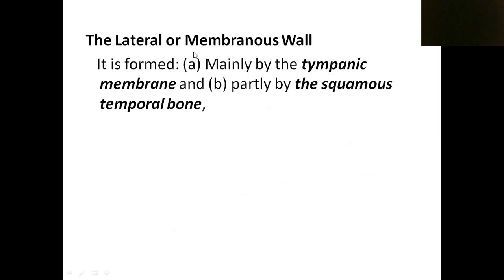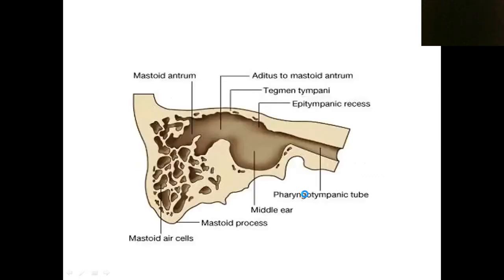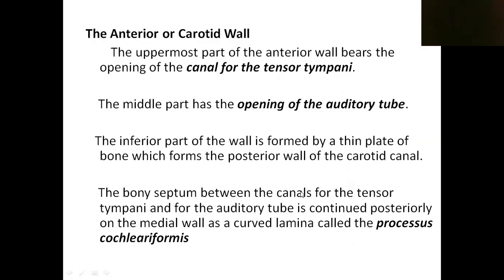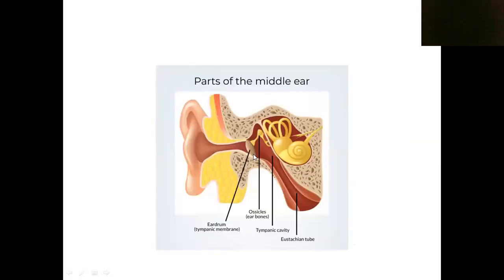The lateral wall is formed by the tympanic membrane. This is the medial wall and this one is the lateral wall of the middle ear. The lateral wall of the middle ear is formed by the tympanic membrane.